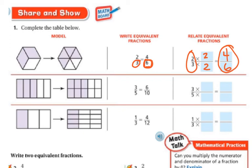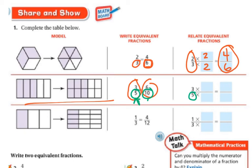Over here we have 3/5 and 6/10. They drew the models out for you. I'm looking at the bottom numbers: 5 and 10. What do I need to do to 5 to make it 10? 5 times 2 is 10. So if I multiply the bottom by 2, I get 10 on the bottom. Whatever I do to the bottom I have to do to the top. So 3 times 2 is 6. Therefore, 6/10 is equivalent to 3/5.